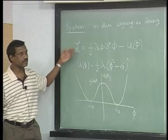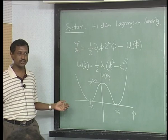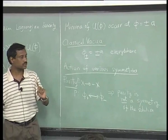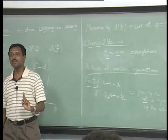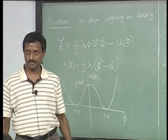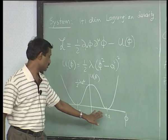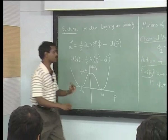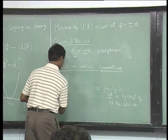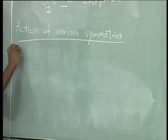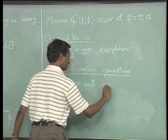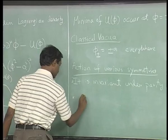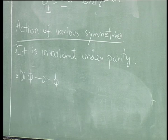This is a standard pattern: if you have a symmetry in your theory, it will be a symmetry of your Lagrangian or equations of motion, but need not be a symmetry of your solution. There is another discrete symmetry d: φ goes to minus φ, which is also a symmetry of the Lagrangian, and under d, φ₊ goes to φ₋ and φ₋ goes to φ₊.